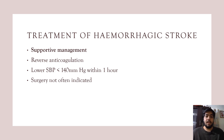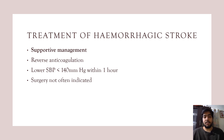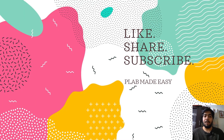Treatment of hemorrhagic stroke is very different from ischemic stroke and is mostly supportive. You need to reverse anticoagulation if the patient is on anticoagulants and lower the systolic blood pressure to less than 140 mmHg within one hour. Surgery is not often indicated in hemorrhagic strokes.